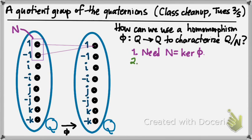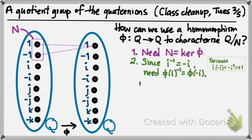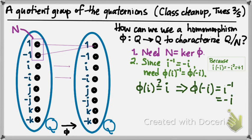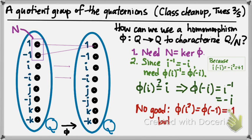One reason we run into trouble: since i and -i are inverses in the quaternion group, if φ is a homomorphism, the images of +i and -i also need to be inverses of one another. For example, if I decide to send i to i, then I would have to send the inverse of i to the inverse of i — in other words, -i would have to go to -i. But this is no good, because where does i² go? If φ is a homomorphism, the image of i² equals the square of the image of i. The image of i² is the image of -1, which is 1, but the square of the image of i, if φ(i) = i, is i² = -1. So we can't make a homomorphism that sends i to i.